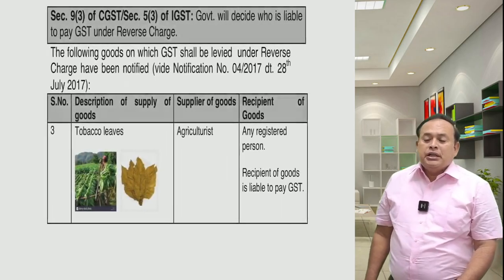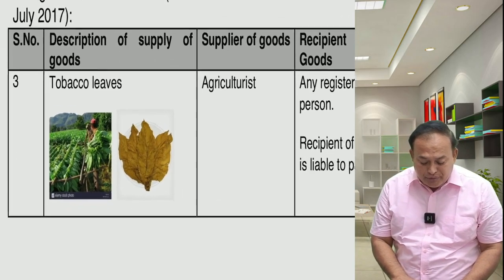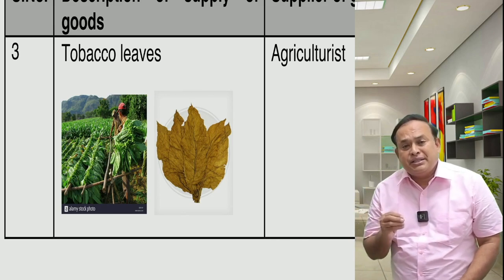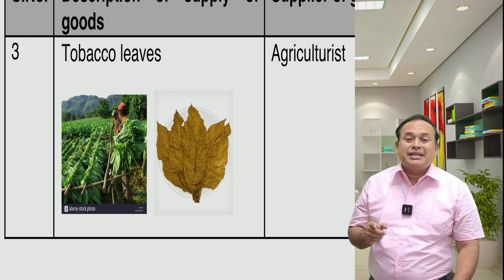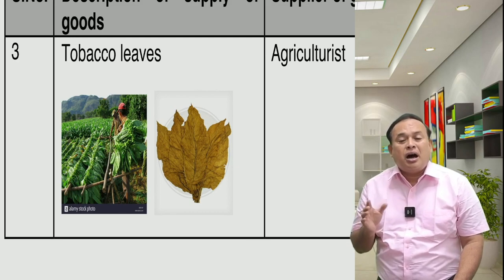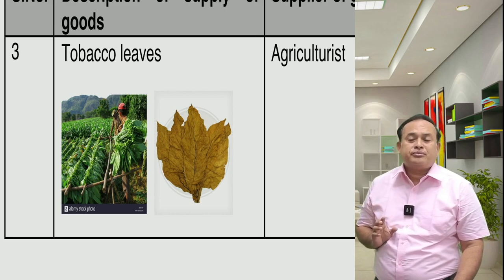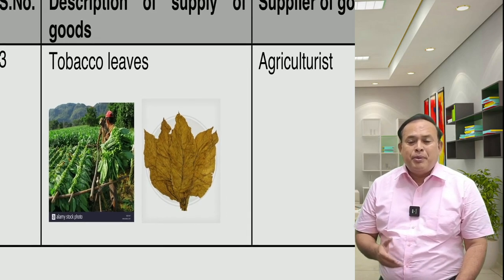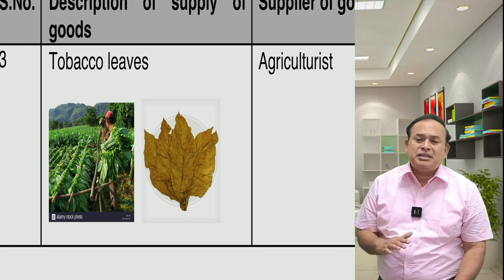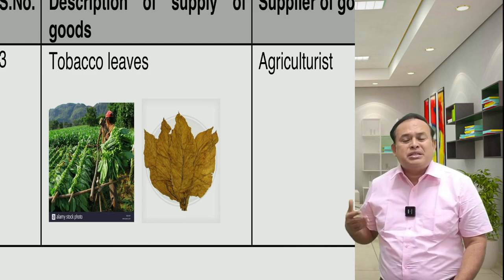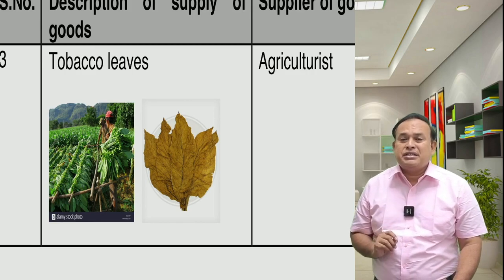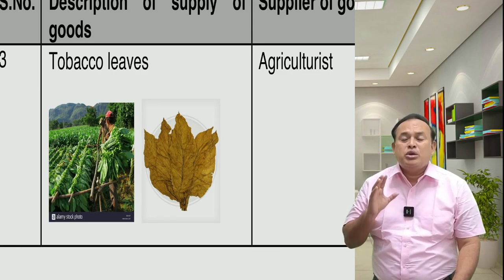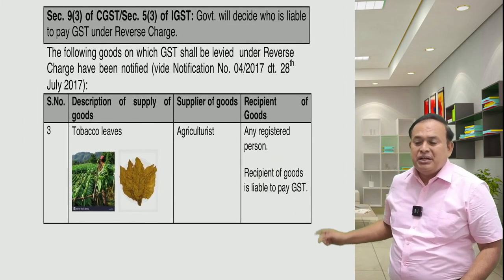For tobacco leaves: if tobacco leaves are supplied by an agriculturalist to a registered person located in the taxable territory, the liability falls on the recipient under RCM — the recipient only is liable to pay GST. Such tobacco leaves may be in raw form, or they may be harvested, stored for some time, and become dried — as long as they are supplied by an agriculturalist to a registered person, the recipient only is liable to pay GST.